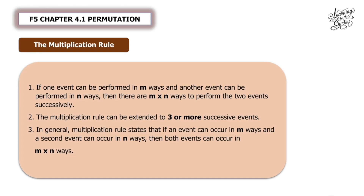In today's video, we're going to learn about the multiplication rule in the chapter permutation. According to the multiplication rule, number 1: if one event can be performed in m ways and another event can be performed in n ways, then there are m times n ways to perform the two events successively. The meaning of successively means one event after another.